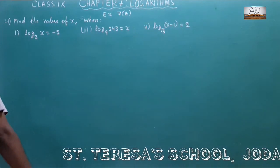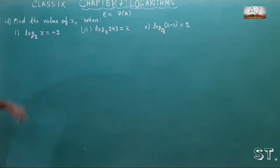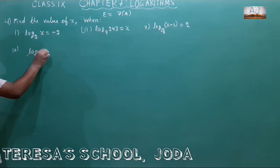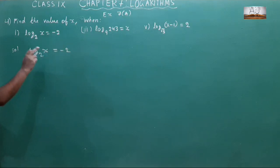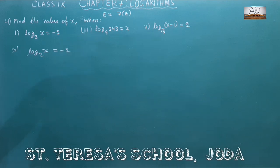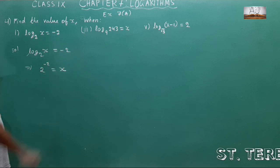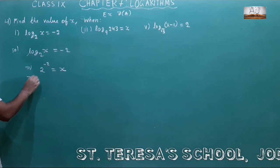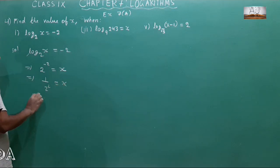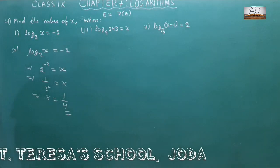Now question number 4: find the value of x. The first bit: log x with base 2 is equal to minus 2. Convert to exponential form: 2 to the power minus 2 equals x. Now 2 to the power minus 2 is 1 by 2 squared, so x equals 1 by 4. The value of x is 1 by 4.